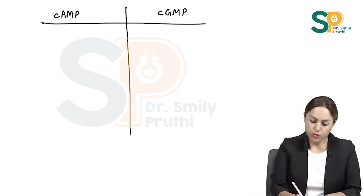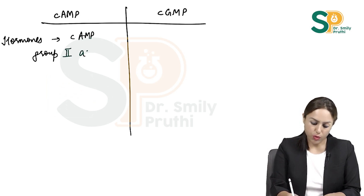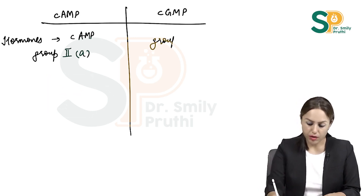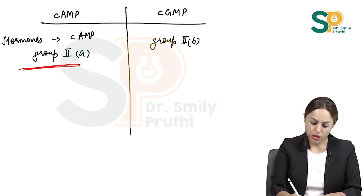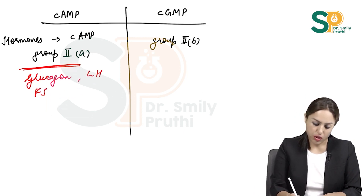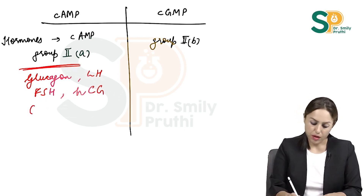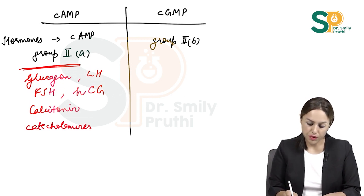Hormones that use cyclic AMP are Group A hormones, and hormones that use cyclic GMP are Group B hormones. Group A hormones include glucagon, LH, FSH, human chorionic gonadotropin (HCG), calcitonin, and catecholamines.